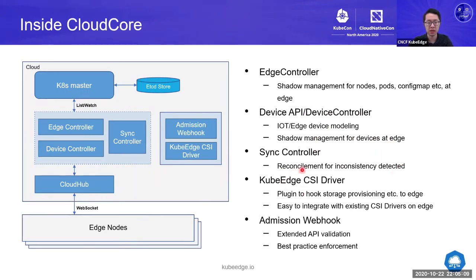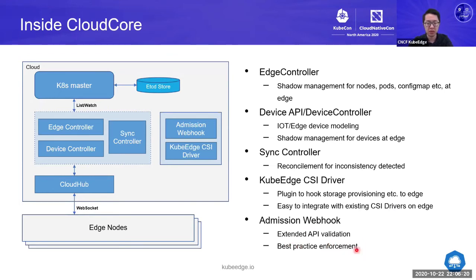We also added a sync controller to do reconciliation between cloud and edge when any inconsistency is detected. The KubeEdge CSI driver is a plugin to hook storage provisioning requests to the edge, making it easy to integrate third-party CSI drivers — you can install any existing third-party CSI driver implementation to KubeEdge without worrying about cloud-edge communication. The admission webhook is currently validating extended APIs like the device API, and we are developing a lot of best-practice enforcement for edge computing use cases — for example, if a node goes offline for a period of time, we may not evict the pod within the default timeout period.